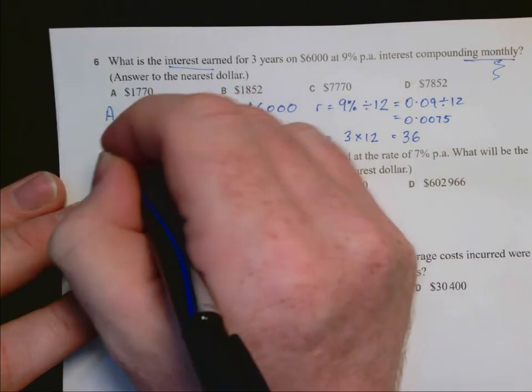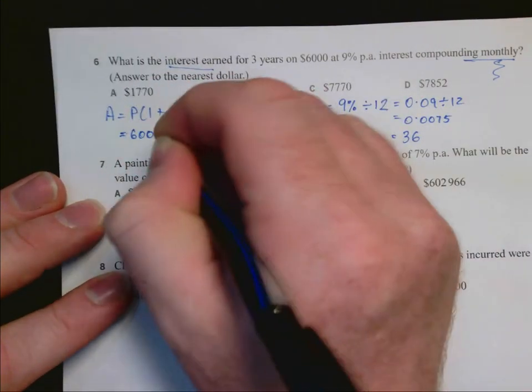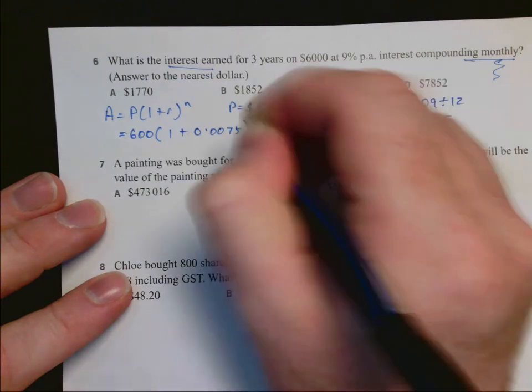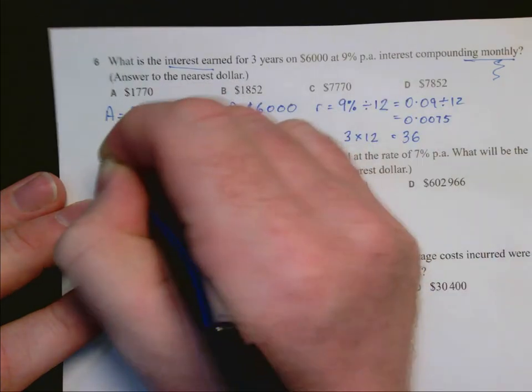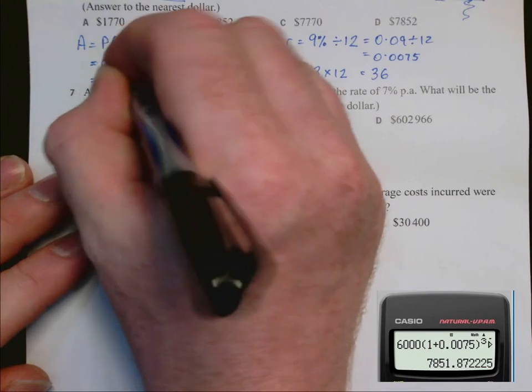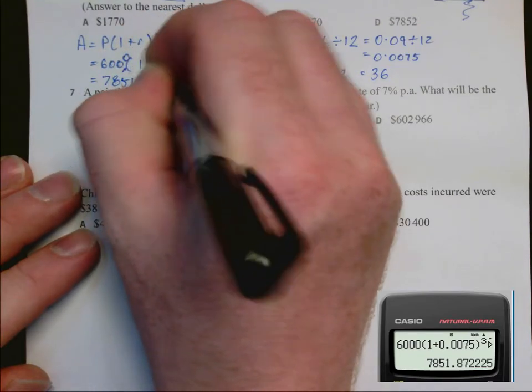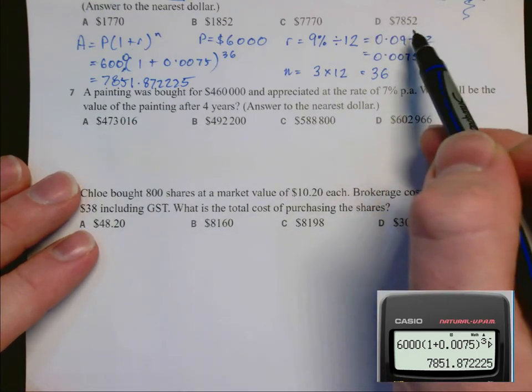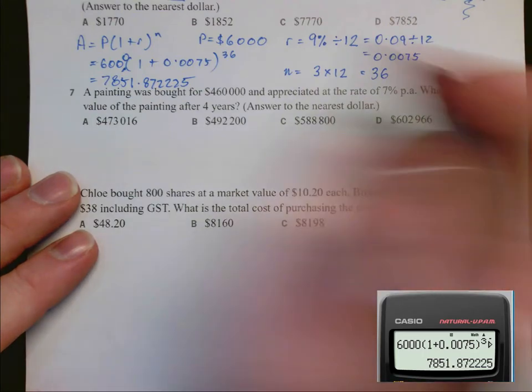So back into our formula, we have 6,000 times 1 plus the rate to the power of the number of time periods. On our calculator, 6,000 bracket 1 plus 0.0075 to the power of 36 gives us this long answer: 7,851.872225, and that's one of the answers up here.